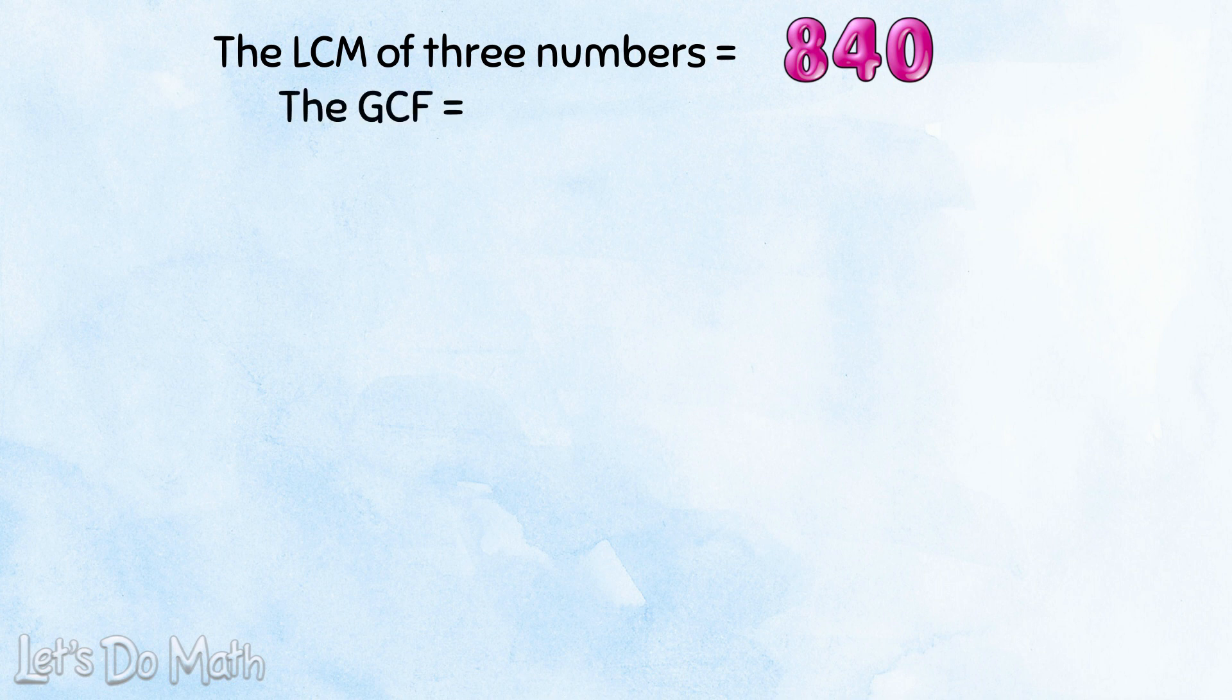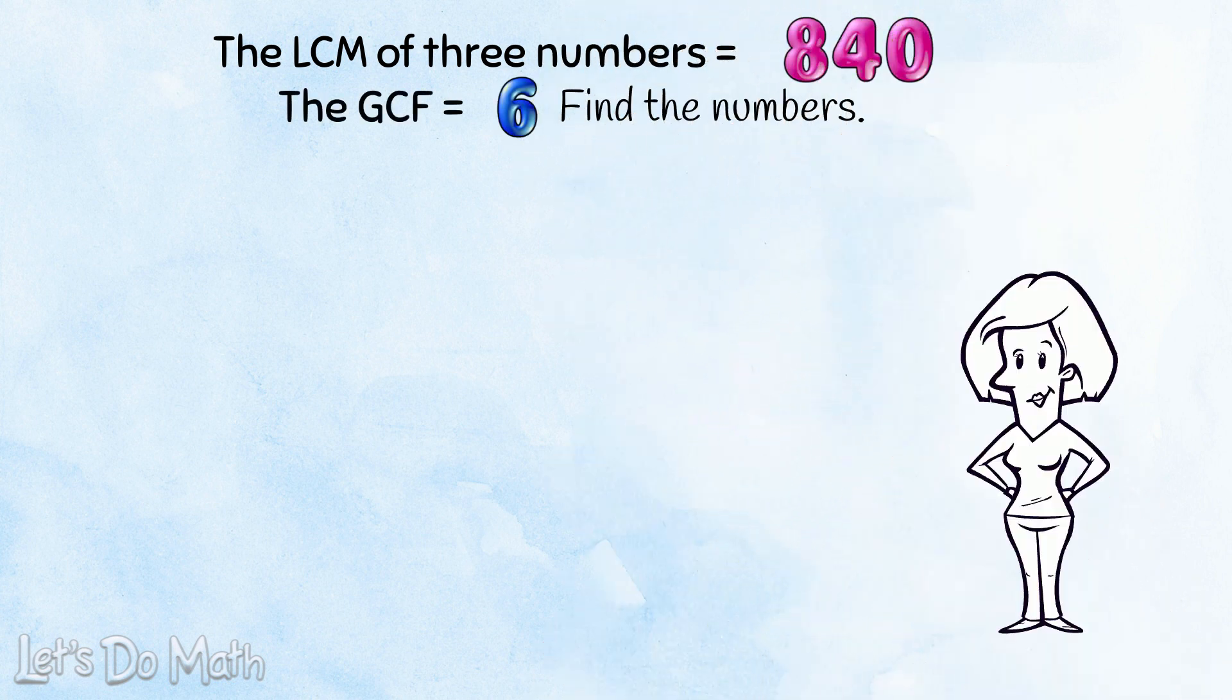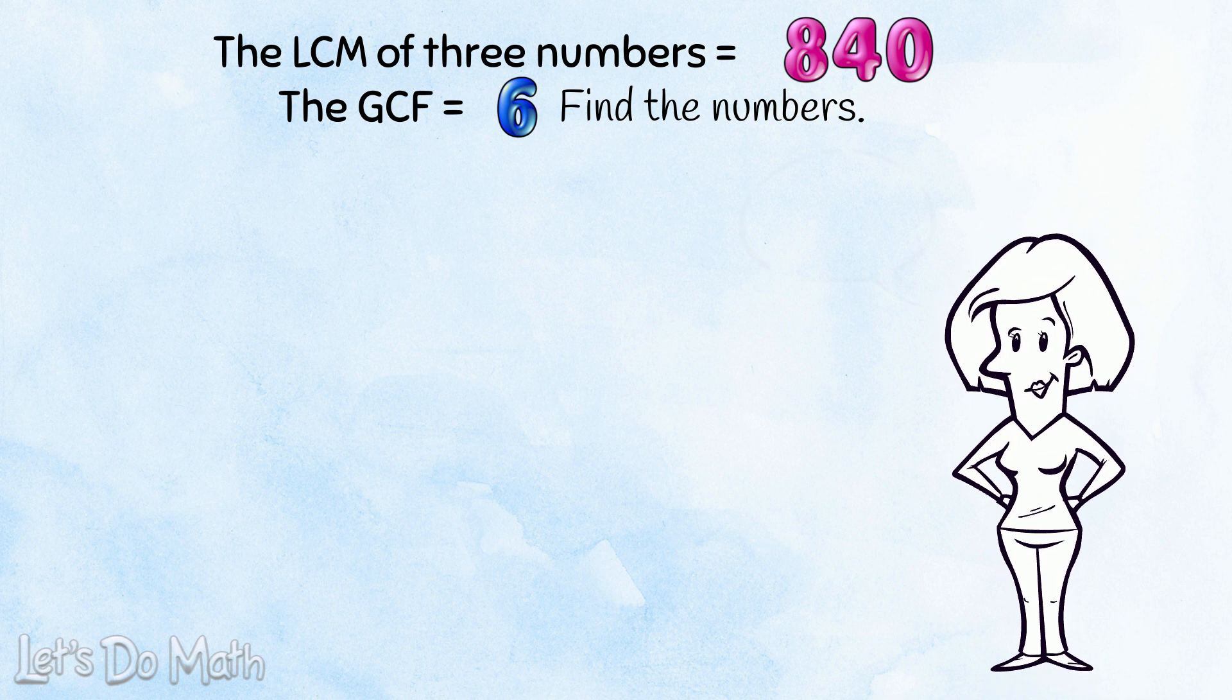We're told the LCM of 3 numbers is 840 and the GCF is 6. We have to find the numbers. To solve a problem like this, we're going to think backwards from the LCM.